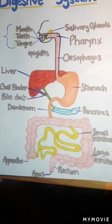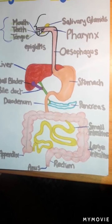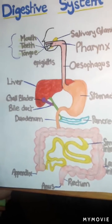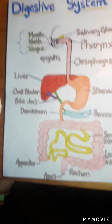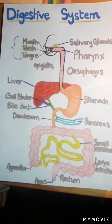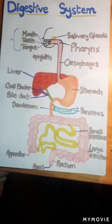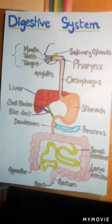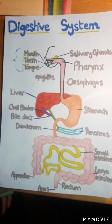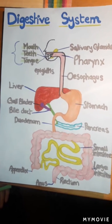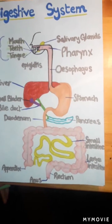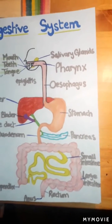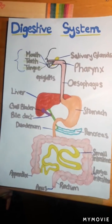Next destination: the small intestine. Once the particles reach the small intestine, juices from the liver and pancreas help break them down further. The liver secretes bile, which helps break down fats, and the pancreas releases other enzymes to help digest all kinds of food particles. The small intestine then absorbs those broken-down particles into the body through the blood.